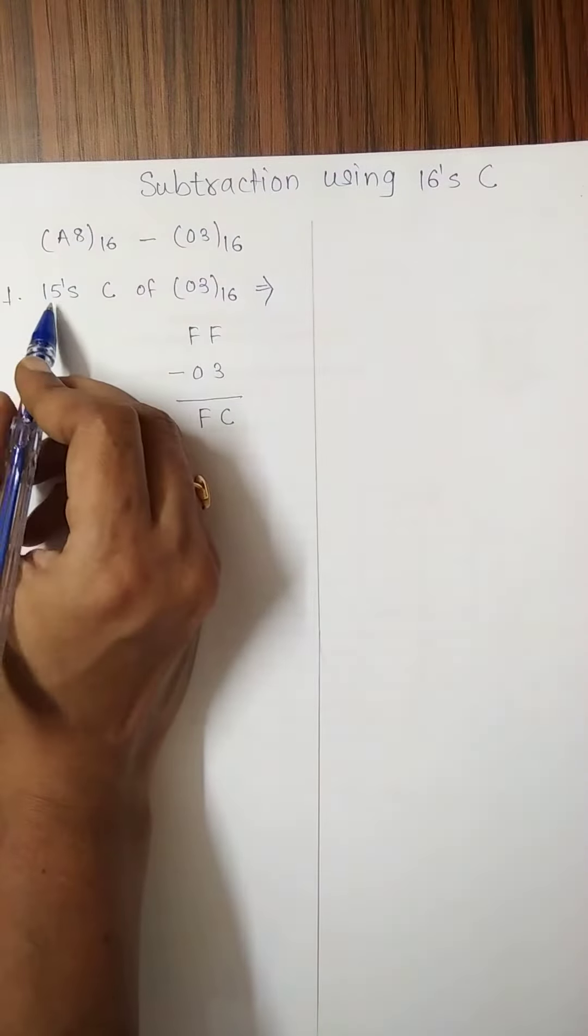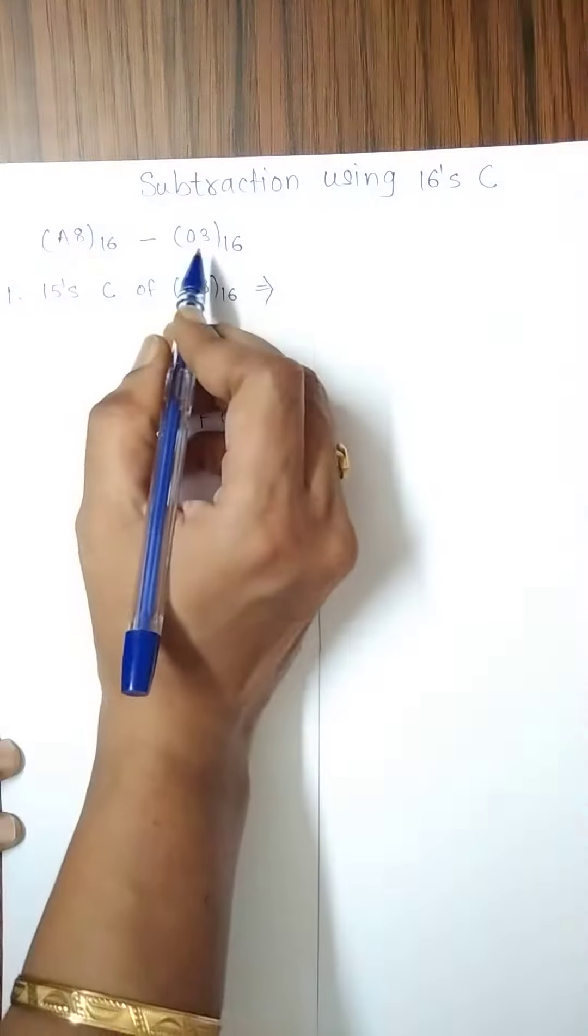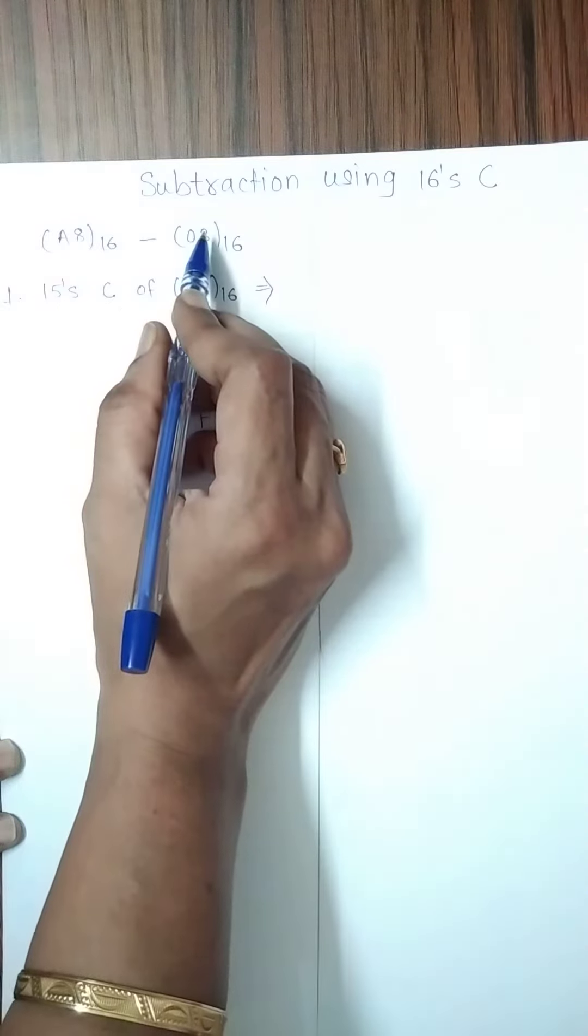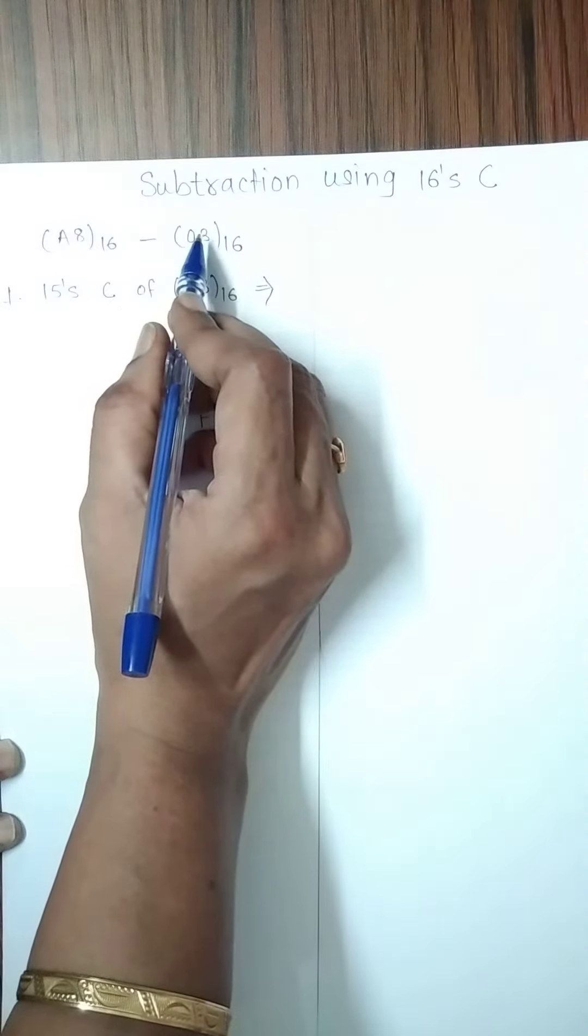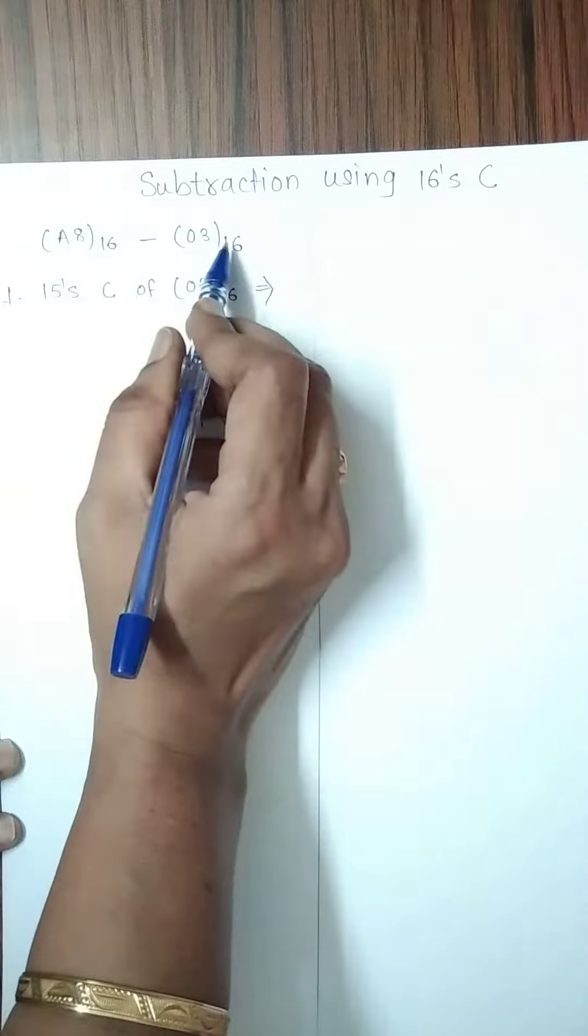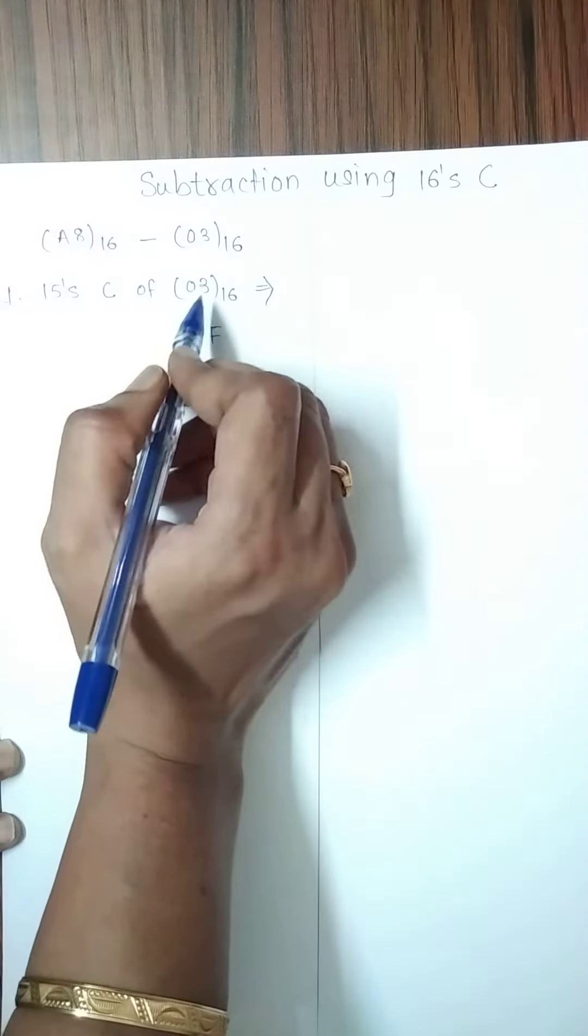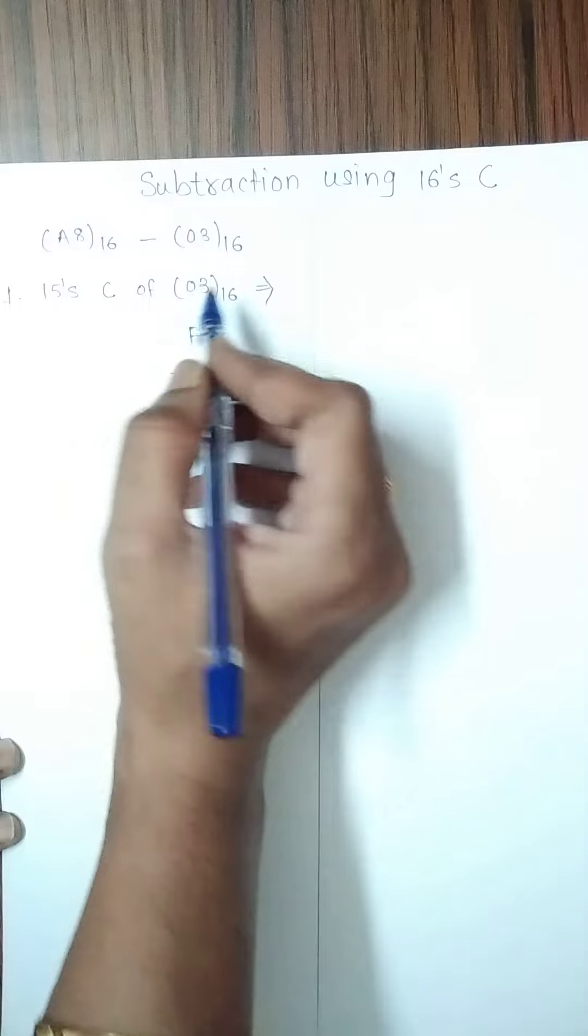Initially, we must calculate the 15's complement of the subtrahend, which is 3 but preceded by 0 in order to make both minuend and subtrahend of equal size. As it is 2 digits long,